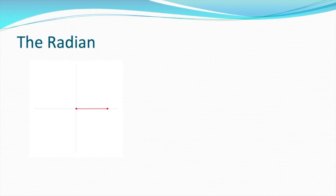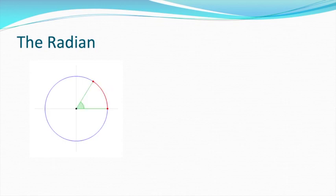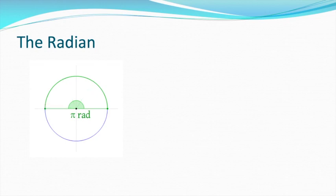Here it is again. If we take the radius and draw a circle and stretch an arc of the circle equal to the radius, the angle produced is equal to one radian. Here's two radians because that's two radiuses. Here's three radiuses. And you get 3.14 radiuses around half a circle — that's pi radiuses. In a complete circle, you get 2 pi radiuses around the circle, so 2 pi radians is the total angle in a circle.